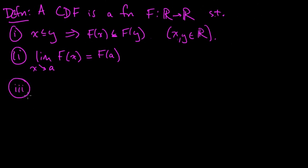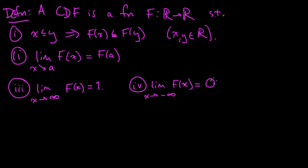A CDF satisfies these properties. Three, the limit as X goes to infinity of F of X equals one. And four, the limit as X goes to minus infinity of F of X equals zero. So a CDF looks something like this: it goes up, it could jump, but it's got to be right continuous. It could jump again, jump a bunch of times. But eventually it levels off, it converges to one.